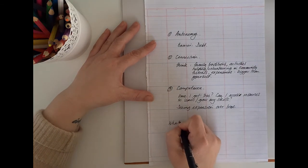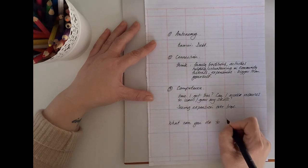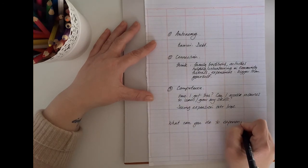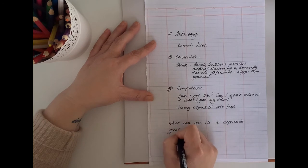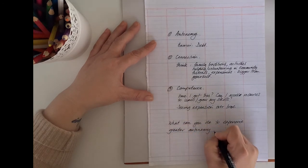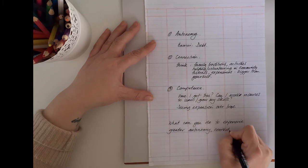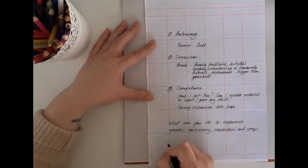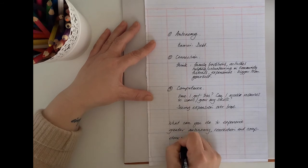I'm curious, do any of these three points resonate for you? I want to leave you with a question to think on. What can you do to experience greater autonomy, connection and competence in your budget and in your life now?